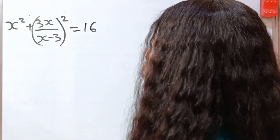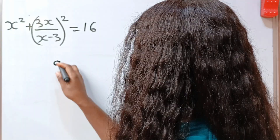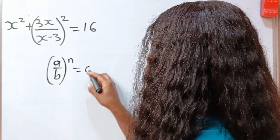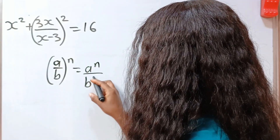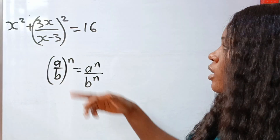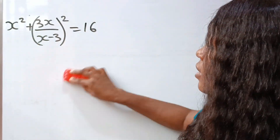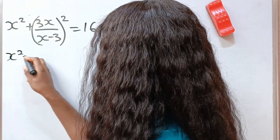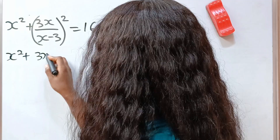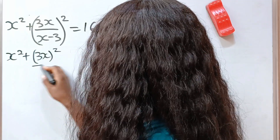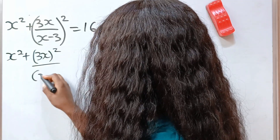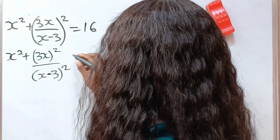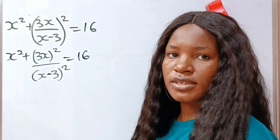First let's open this bracket. Because a divided by b raised to the power of n is equal to a to the power of n divided by b to the power of n. So they'll share the power. That means we can write this as x squared plus 3, all squared, divided by x minus 3 squared, minus, is equal to 16.